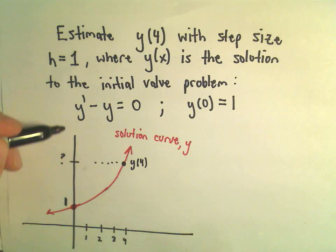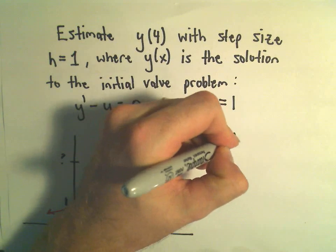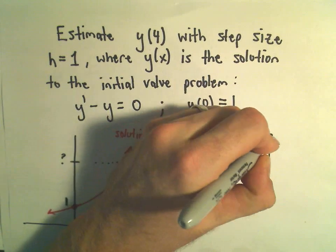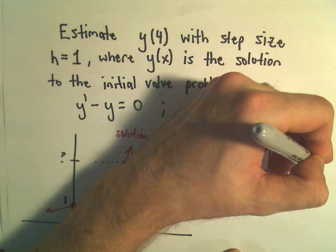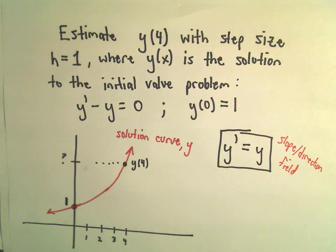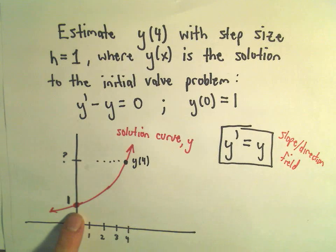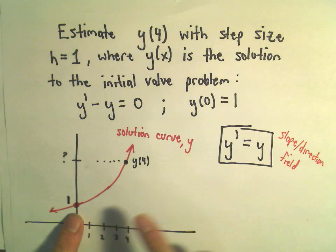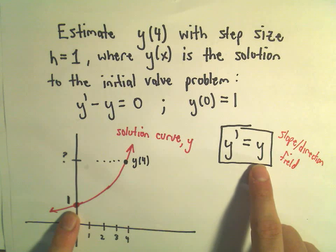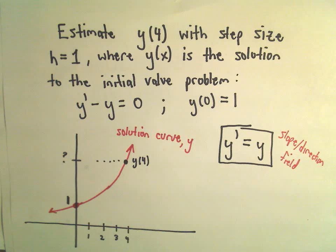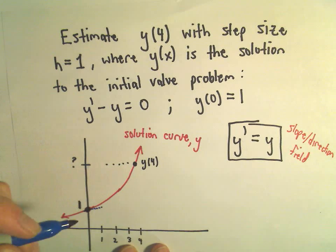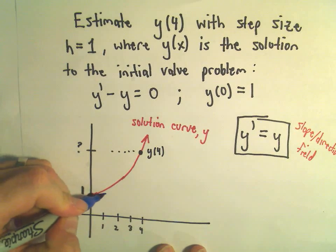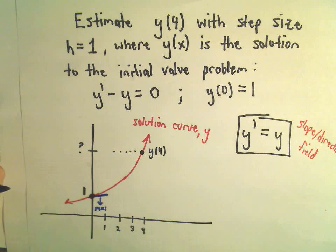Notice we can take y' - y = 0 and rewrite that simply as y' = y. This is what I would use to make my slope field or direction field. Notice, for example, since we're going to use the initial condition y(0) = 1, according to this, the slope of the tangent line at this point (0, 1) — since it's simply equal to the y-coordinate — the slope of our tangent line at this point should have slope of 1.